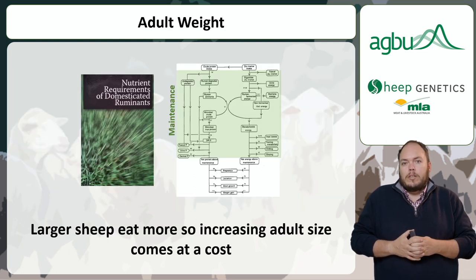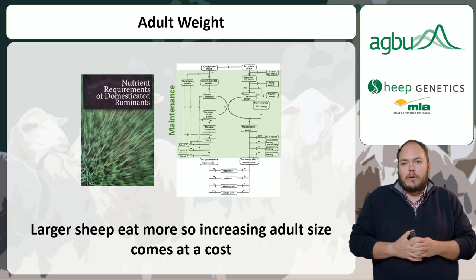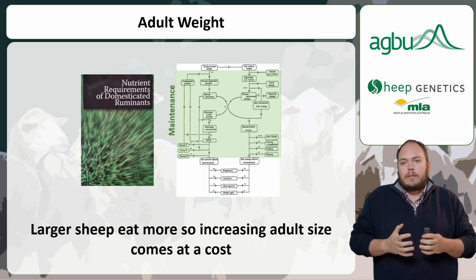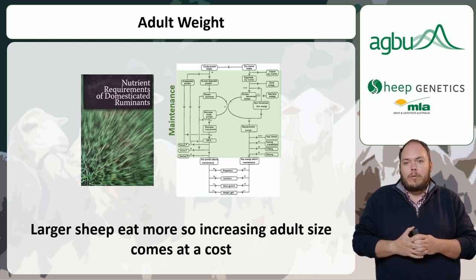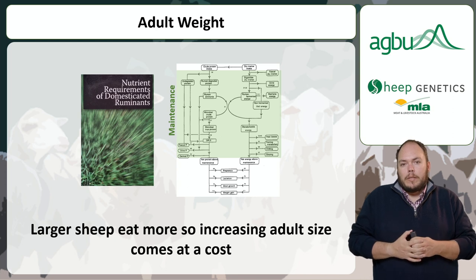Along with improving how condition score is modelled, Sheep Object now models the impact of adult weight far more accurately. While strong positive genetic correlations exist between early growth and adult weight, current indexes all contain a negative economic weighting on adult weight. This negative economic value on adult weight occurs as increases in adult weight lead to increased maintenance demands, and in turn increased feed consumption and costs. These weightings aim to help cap adult weight, providing a balanced approach as we try to bend the growth curve.